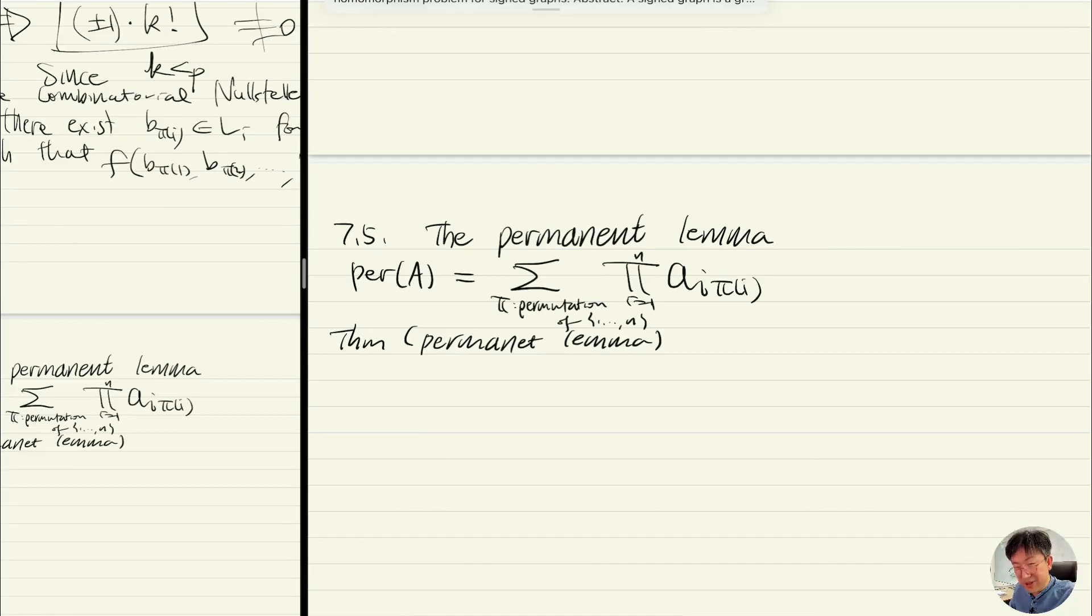The determinant is similar, but in the determinant you also multiply sign of the permutation. Here you don't multiply sign. When you have a matrix [a,b;c,d], in this case it's ad plus bc, that's the permanent.